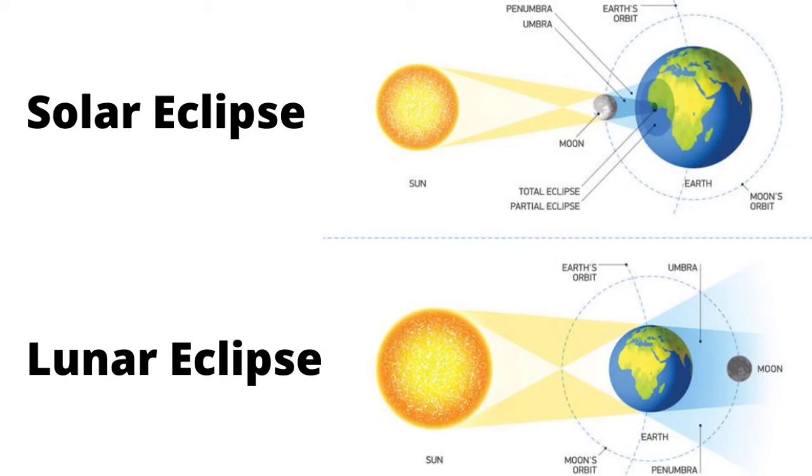Lunar eclipse is also of two types: partial lunar eclipse, when only a part of the moon is covered by Earth's shadow, and total lunar eclipse, when the entire moon is covered.